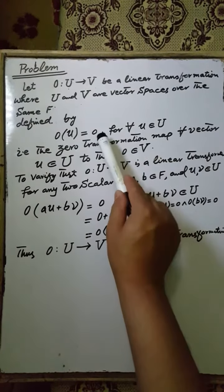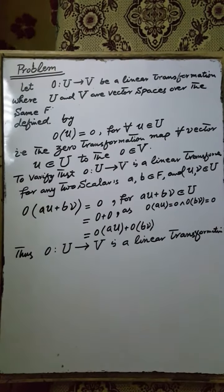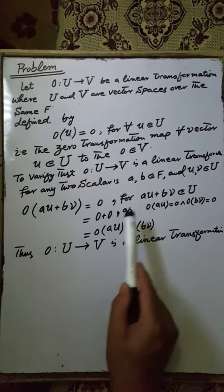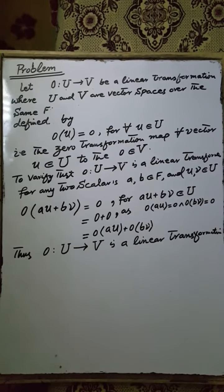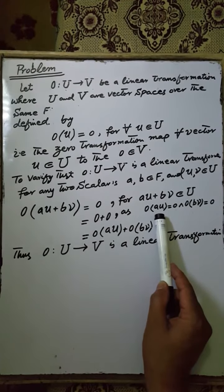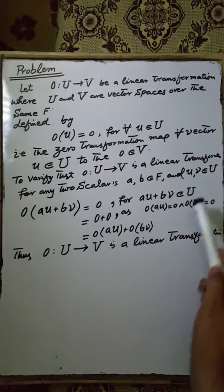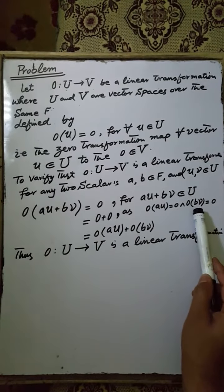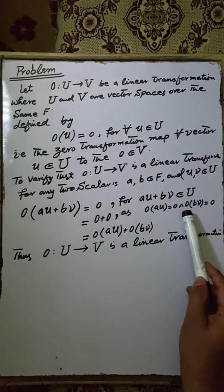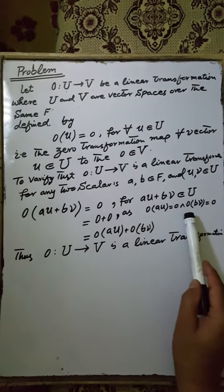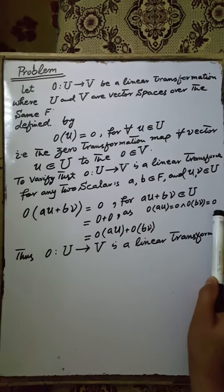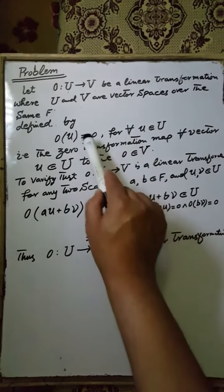According to our given hypothesis, 0 can be written in the form of 0 + 0, that is the zero vector of the vector space V over the field F. When we apply the zero mapping to an element au of the vector space U, this gives the zero vector, and bv is again an element of the vector space U, which gives the zero vector of the vector space V.